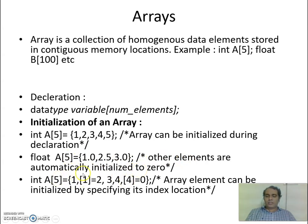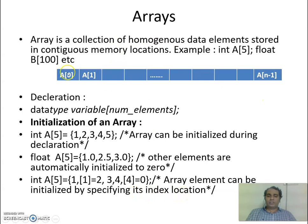We can have like this also. With the array index at the location, I am specifying what value it can hold. Array element can be initialized by specifying its index location. So this is how the array looks: A[0], A[1] and it can go up to n minus 1. The array index starts from 0 and goes up to n minus 1.